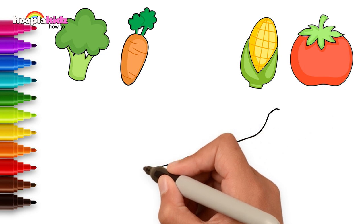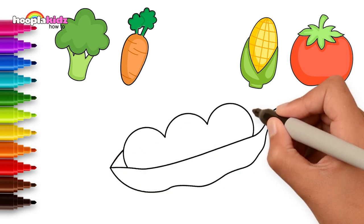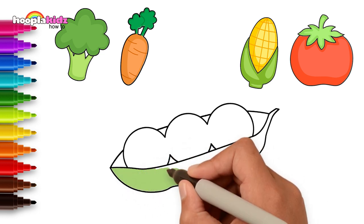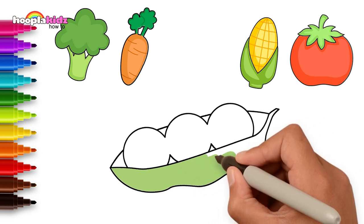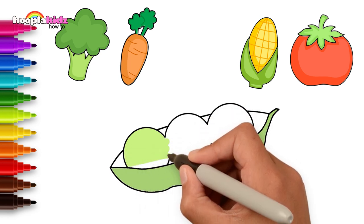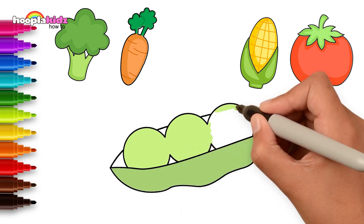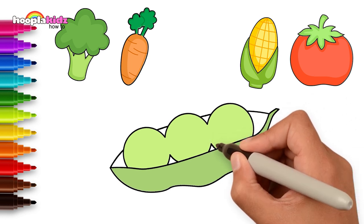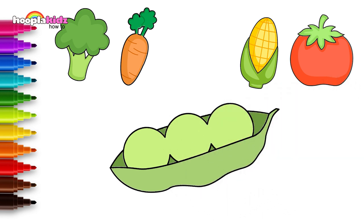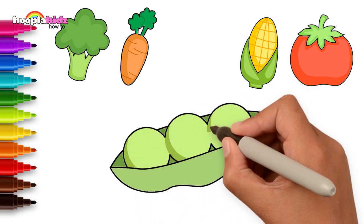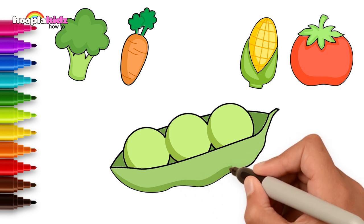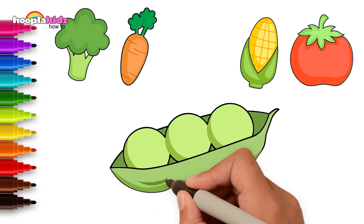Time to draw some peas. A curvy long line joined at both ends. Little circles for the peas. Let's color it in with some light green. A different shade of light green for the peas. A little bit of dark green to color in the empty space. Details are important. Don't forget them! Looks great! Delicious peas! I love pea soup! Don't you?